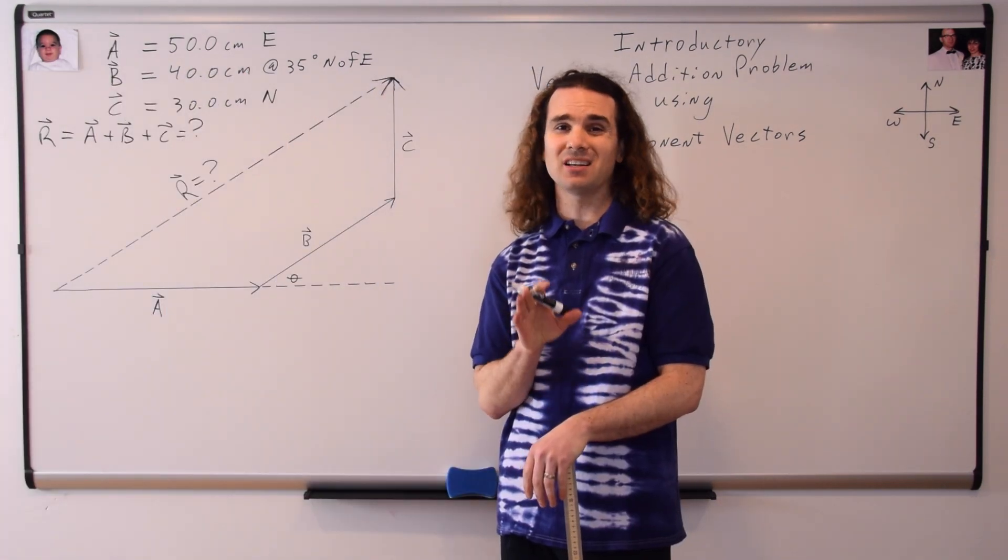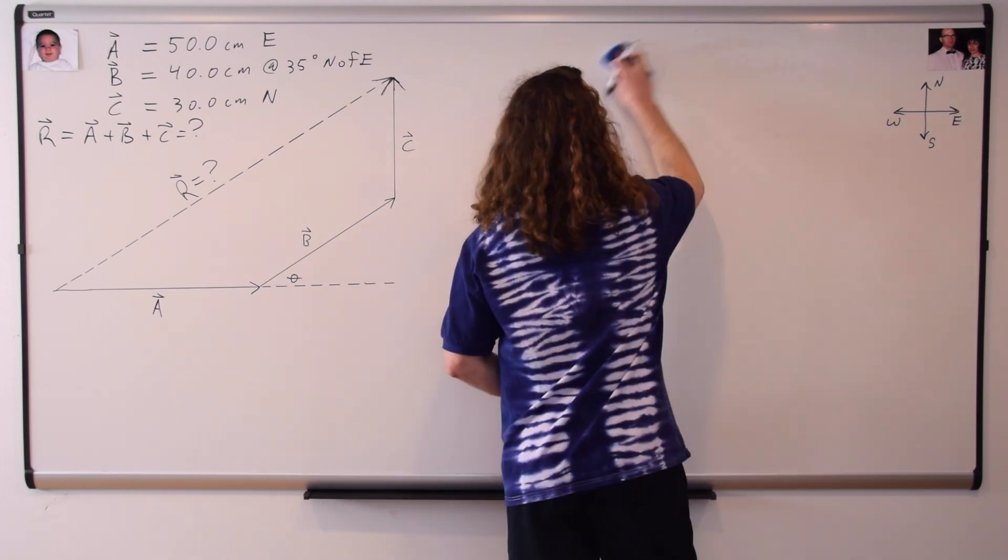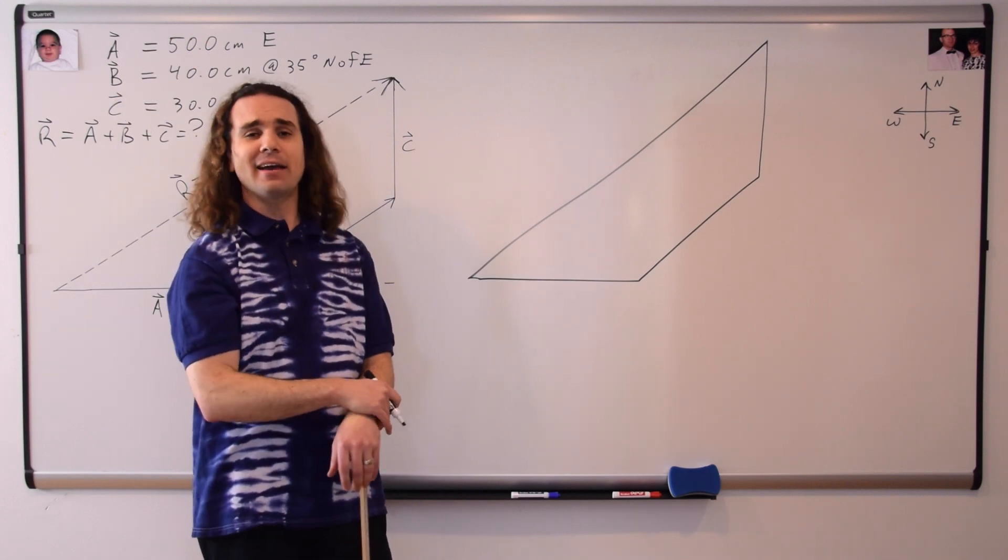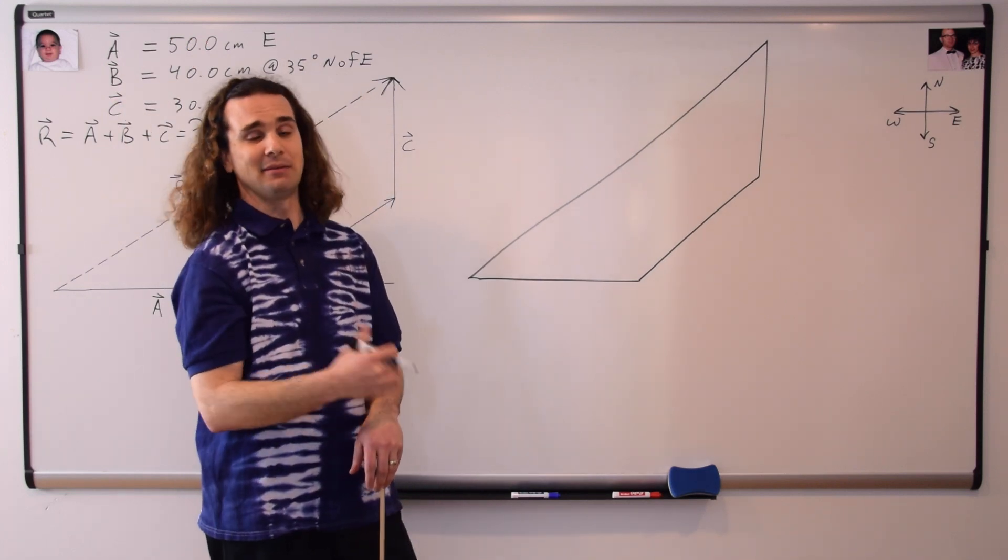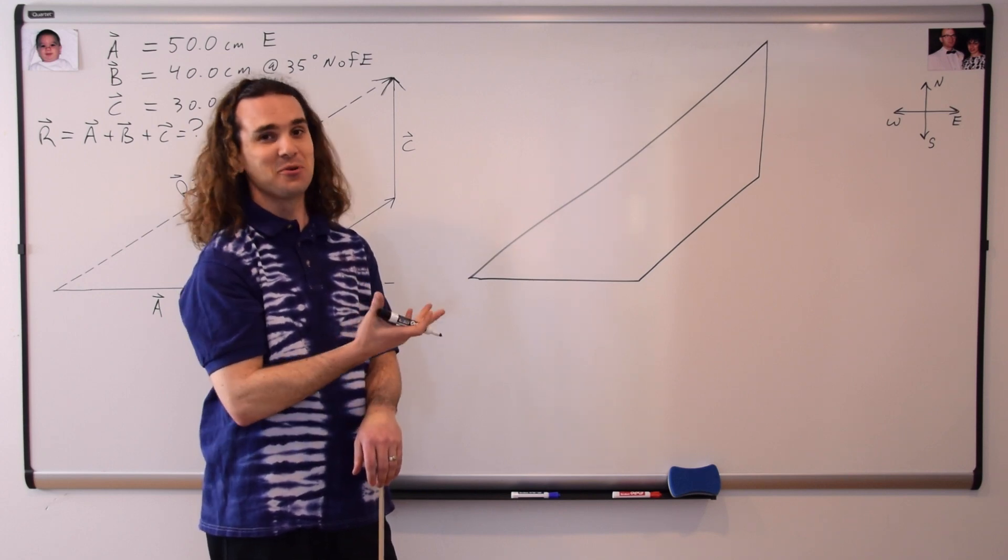Another thing I want to point out is that a lot of students want to draw their vector diagrams like this. You guys would be like, Mr. P, Mr. P, I drew my vector diagram. And I'm like, no, no, no you didn't. That ain't no vector diagram. Class, what is this? That is a quadrilateral. You could also call it a quadrangle or a tetragon, but quadrilateral is probably what it's most often called.